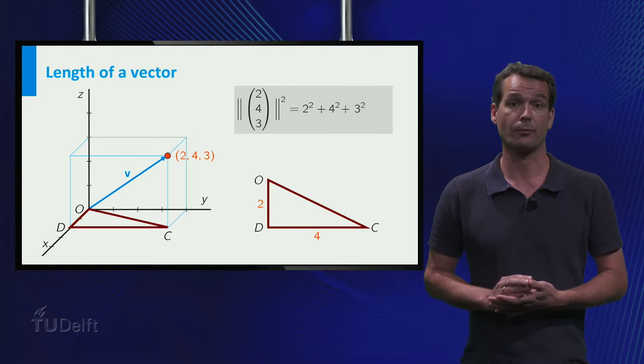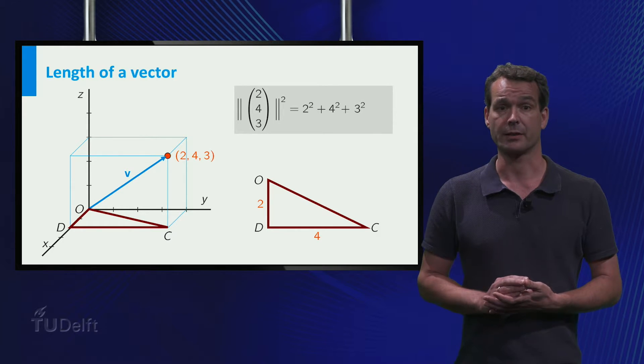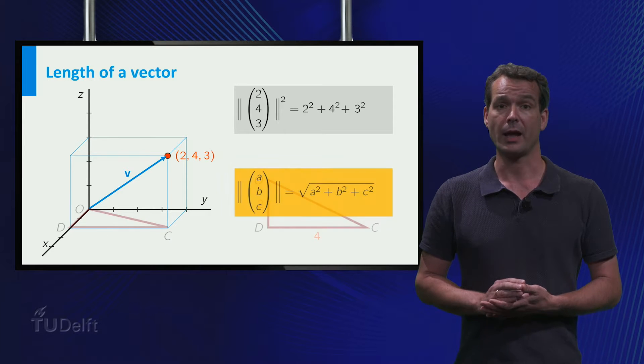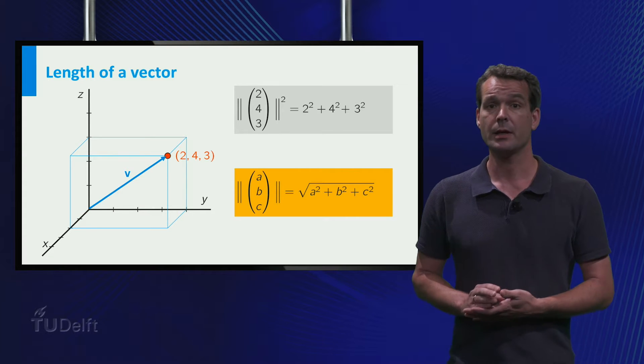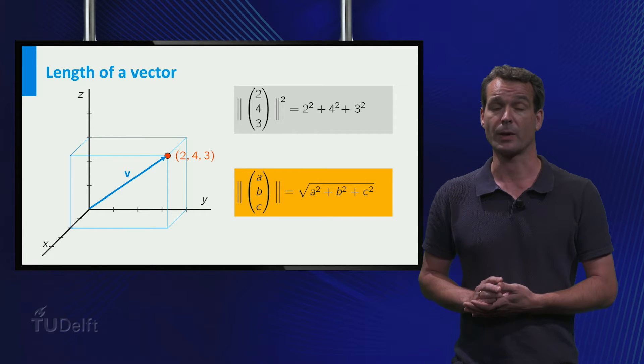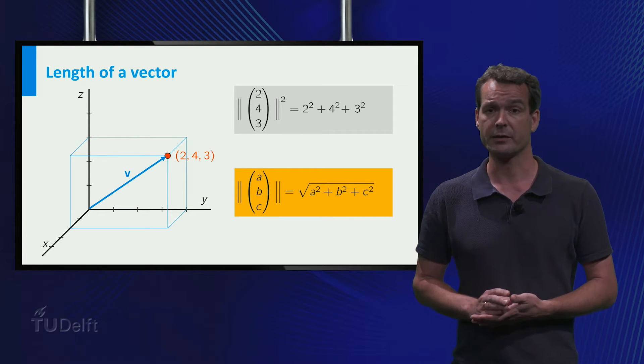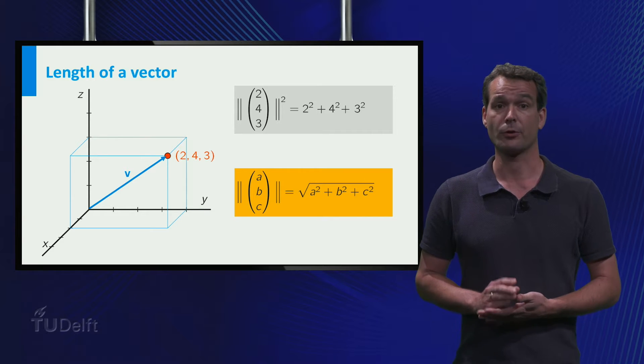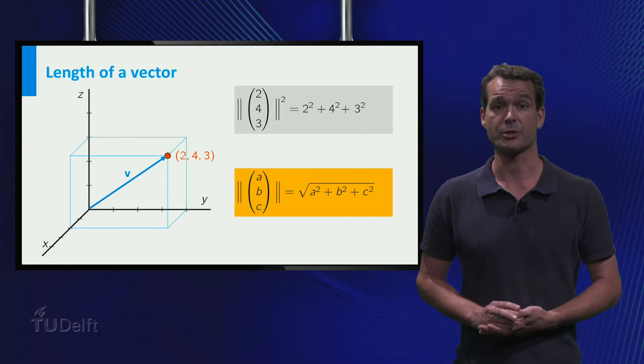Such a calculation can of course be done with any three-dimensional vector. In general, the length of the vector ABC is the square root of a squared plus b squared plus c squared. You see, apart from the term c squared, this looks very much like the formula for the length of a two-dimensional vector.